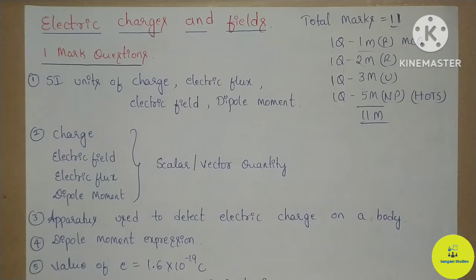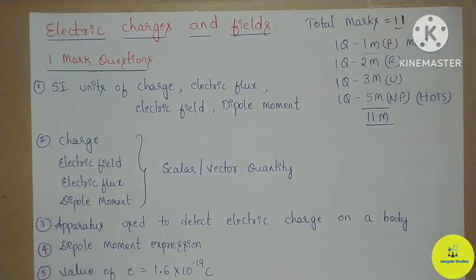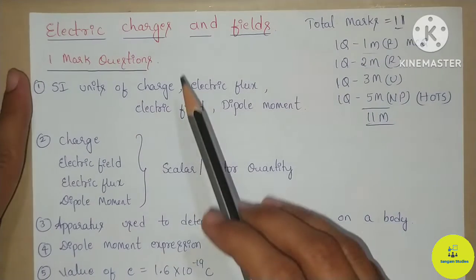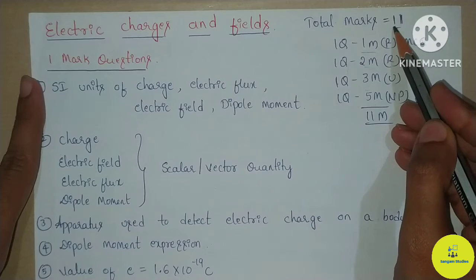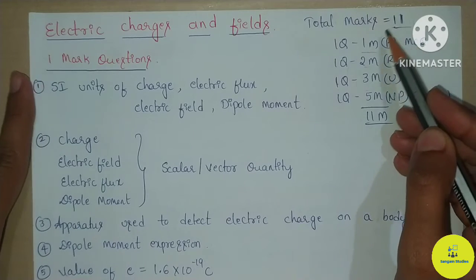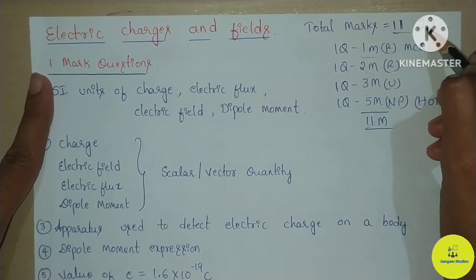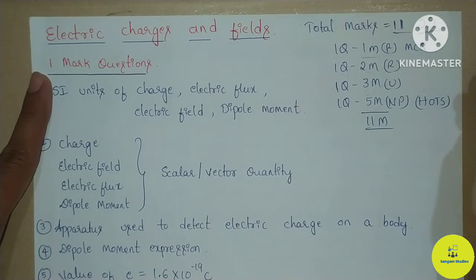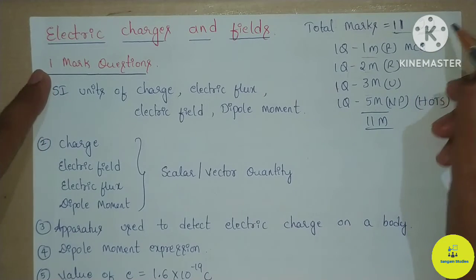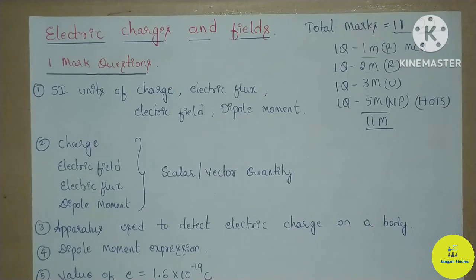There are many topics. I will pick up these topics and frame questions for you. In the final examination, you will read 11 marks. In the midterm examination, you will read 22 marks from this chapter — the exact 22 marks, plus or minus 2, 3, or 4 marks variation.